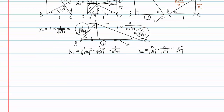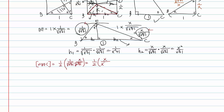Now we can find the area of triangle BEC. It's leg times leg divided by 2: one half times 1 over square root of X squared plus 1 times X over X squared plus 1, which simplifies to X over 2 times X squared plus 1.